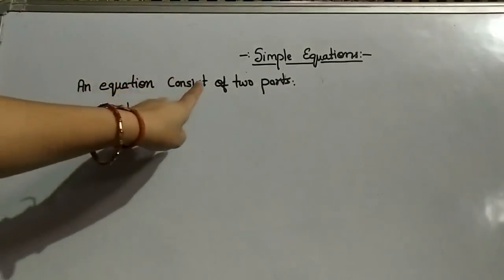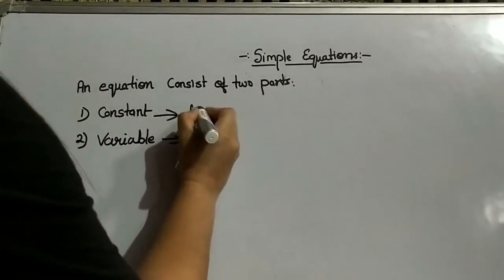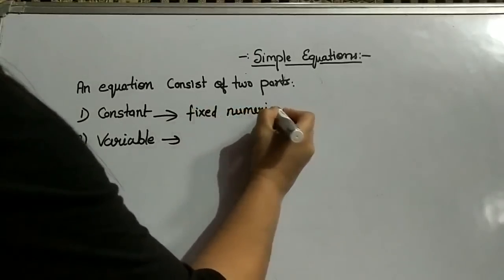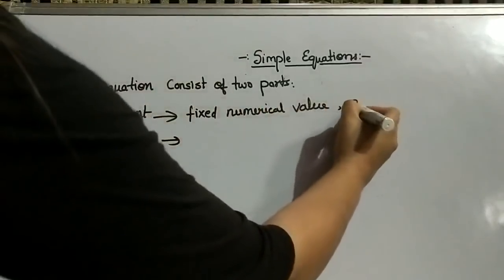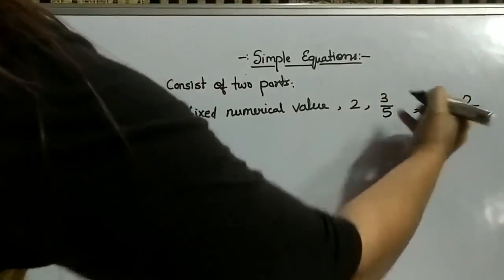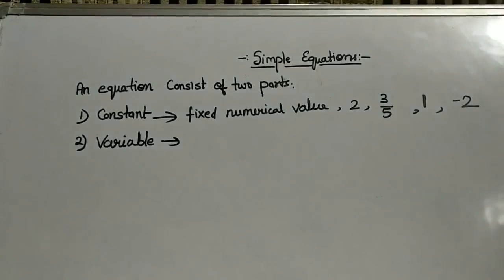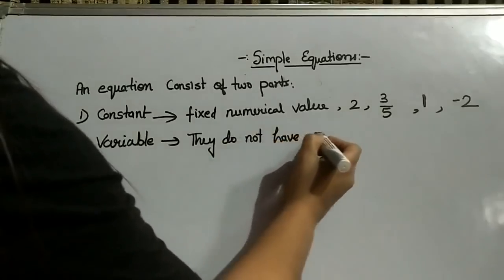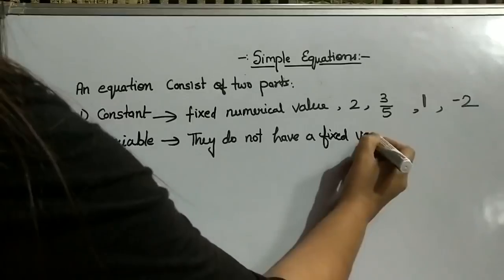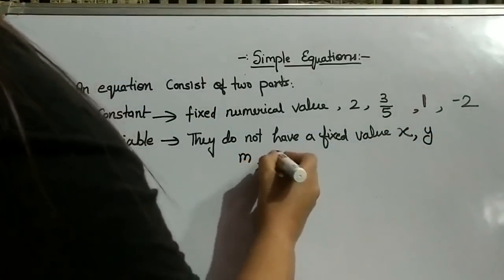An equation consists of two parts. First is constant and second is variable. What is constant? The fixed numerical value is called constant — fixed numerical values like 2, 3 upon 5, 1, minus 2. These are all fixed numerical values. What are variables? They do not have a fixed value — like X, Y, M, P, and so on.